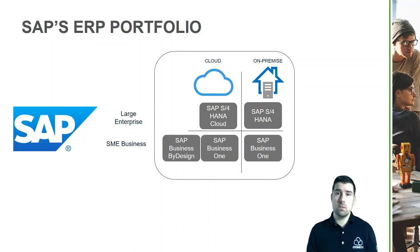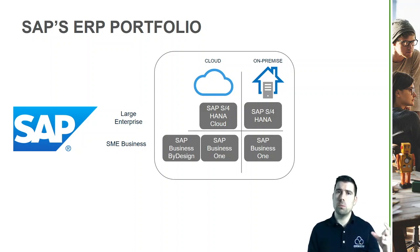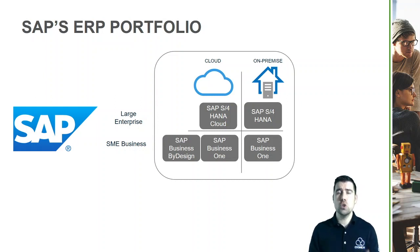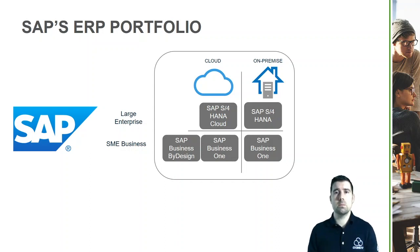The end of the market we're going to focus on in this video is really the small to medium-sized enterprise — that's everyone from a handful of users right up to a couple of thousand users. SAP has two products for that end of the market: SAP Business One and SAP Business by Design.